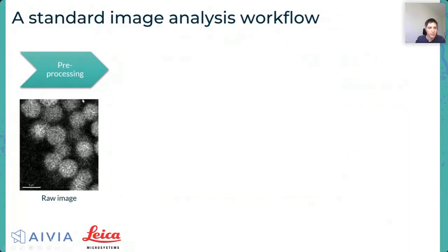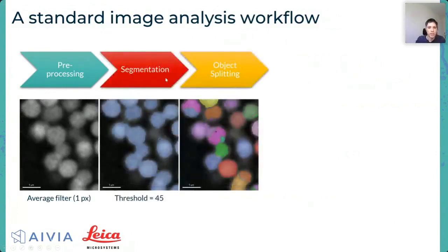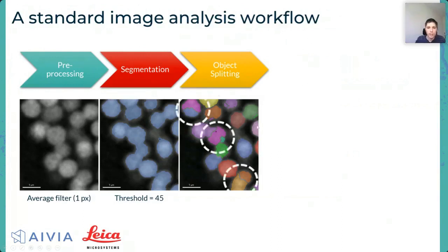I'll show the standard image analysis workflow used in any software. You start with the raw image and consider some pre-processing for noise — for instance, applying a range filter with a radius of one pixel. Then you move on to segmentation: apply thresholding, and potentially split touching objects to get final separated objects. But you soon realize there are some issues — over-splitting or incorrect splitting, particularly in the center.